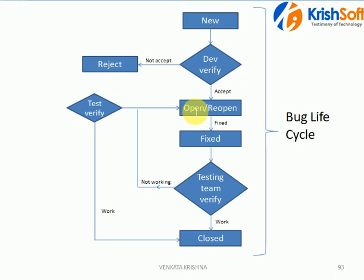Once the bug is open and the development team fixes it, they change the status to 'fixed'. Fixed issues are then pending from the testing team — we need to retest them. If everything is working fine after retesting, we close that particular bug. If it is not working, we send it back to the development team.